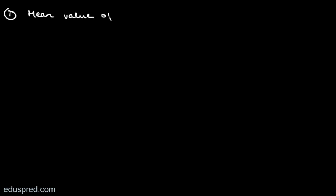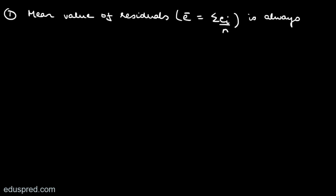The first result is the mean value of residuals in our regression. The mean value of residuals, which we call e-bar, is defined as summation of ei divided by n. This is always equal to 0 if we use the method of ordinary least squares.